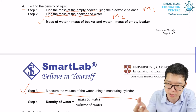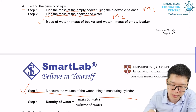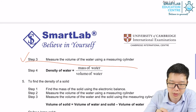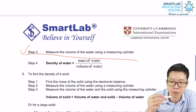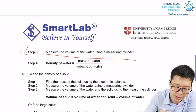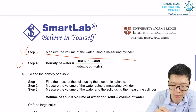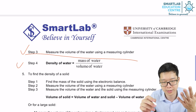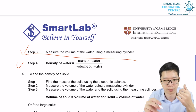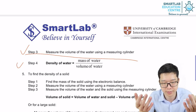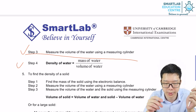That's how we get the mass of a liquid, and that's how we get the volume of a liquid. Then we apply the formula: density equals mass over volume. So that's how we find the density of a liquid.